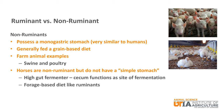While horses are also non-ruminants, they would not be called simple stomach. They are actually hindgut fermenters, which means that the cecum functions as the site of fermentation, much like the rumen in cattle. Horses primarily have a forage-based diet like ruminants.